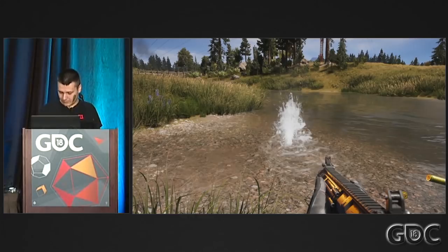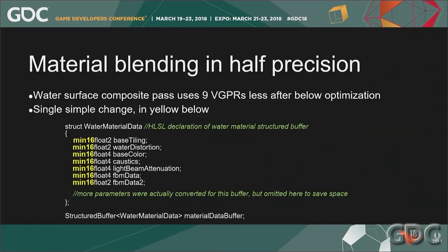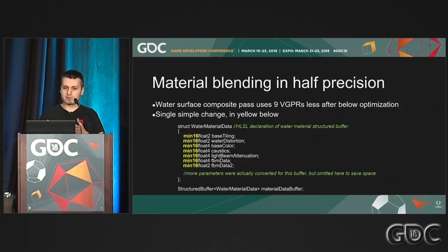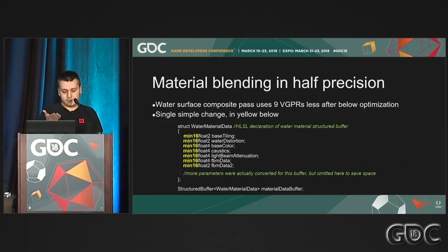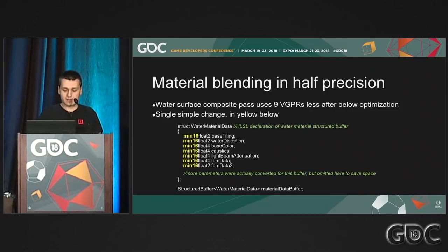I'm here to talk about optimizing shaders using half precision — 16-bit precision — by saving VGPRs. This relates to the material blending done in the surface composite pass, which is VGPR heavy with a lot of different attributes being sampled. These are very easy to optimize with the change you see here. The only change needed in HLSL — shown in yellow — was enough to save nine VGPRs off this path, resulting in an increase in occupancy. The shader went from two waves per CU to three waves per CU, and the overall result was a 25% speedup from this simple change. No C++ changes are necessary.